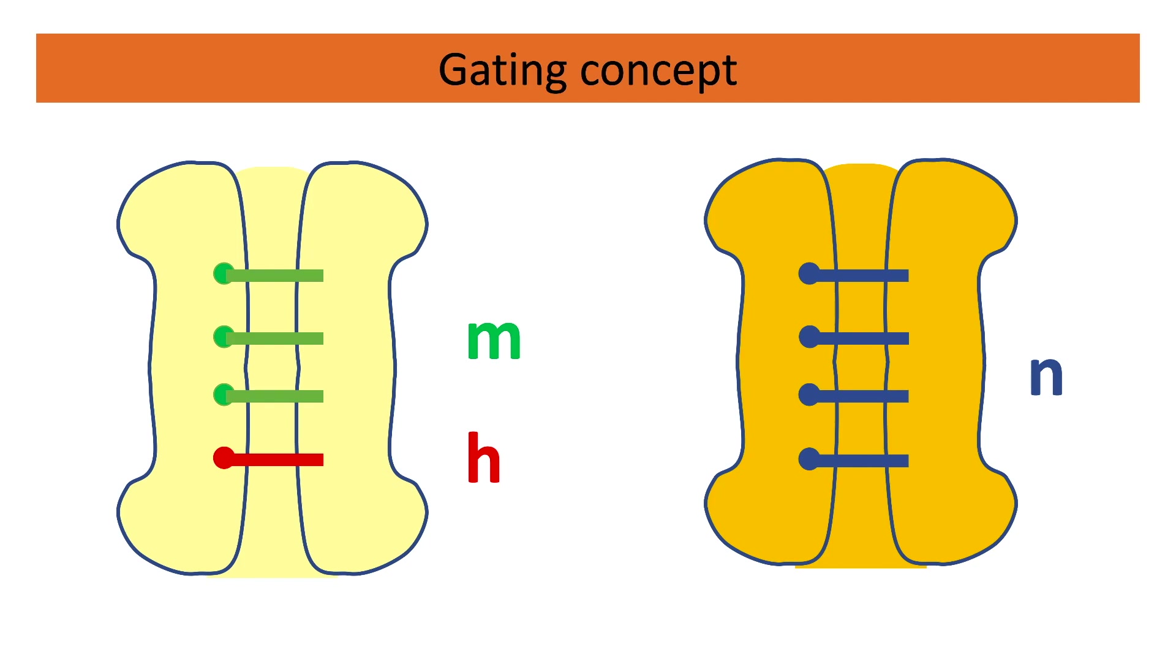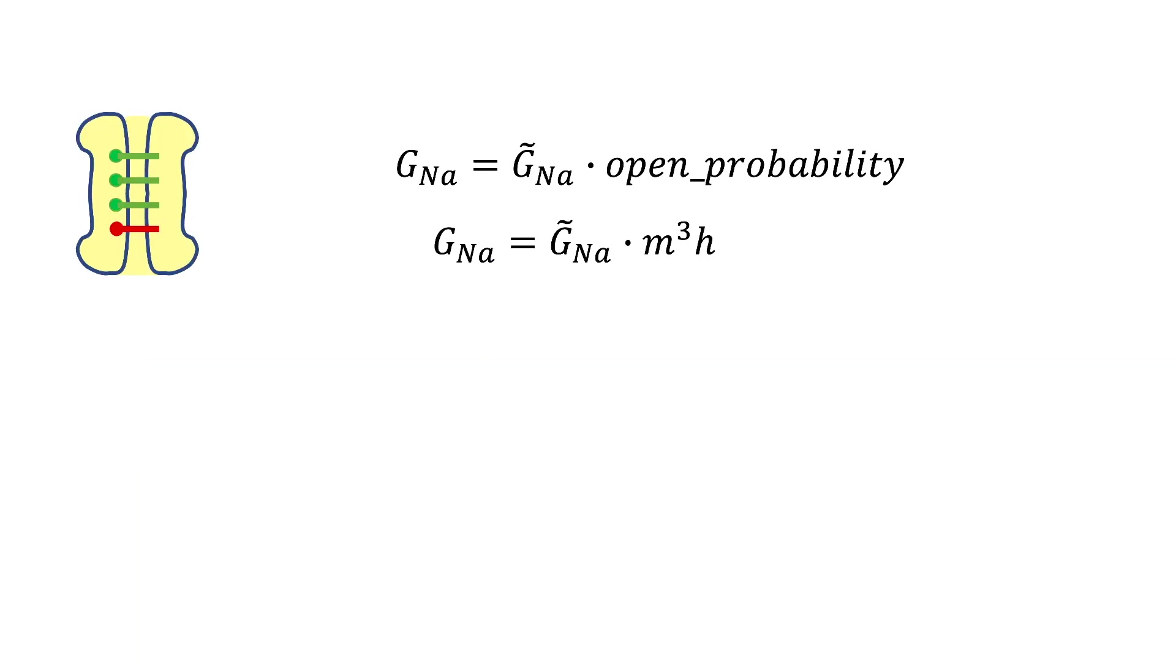We will have a look at their mathematical formulation in a moment. First let's go back, and we now know the formulation for our open probability. So for sodium it's M to the power of 3 times H, and for potassium it's N to the power of 4.